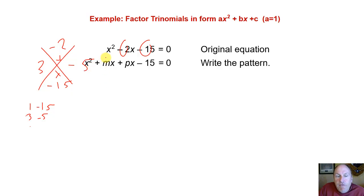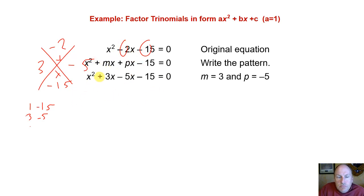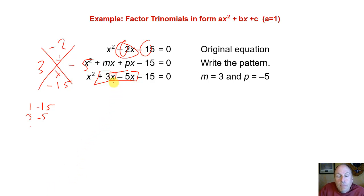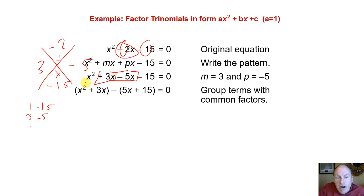We're going to take those two factors — 3 and negative 5 — and put them in for m and p, because together they must add up to get that middle term. So we rewrite this: instead of x squared minus 2x minus 15, we take that minus 2x and break it up into a plus 3x part and a minus 5x part. Together they add up to negative 2x, so we haven't changed it — we're just regrouping. Now we factor by grouping these two parts.